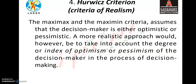In this method there are 5 criteria: the first one is optimistic criteria, the second is pessimistic criteria, the third is regret criteria, the fourth is Hurwicz criteria, and the fifth is Laplace criteria. Up to 3 criteria we have already covered. Let's continue with the 4th criteria, that is Hurwicz criteria.